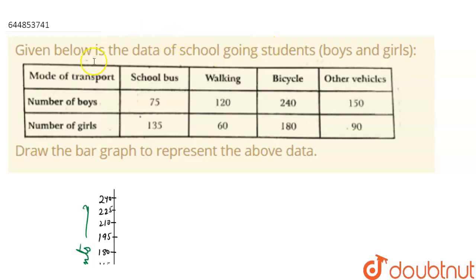Here we have a question which says: given below is the data of school going students, boys and girls. Mode of transport is given, and number of boys and number of girls are given. We have to draw the bar graph to represent the above data.